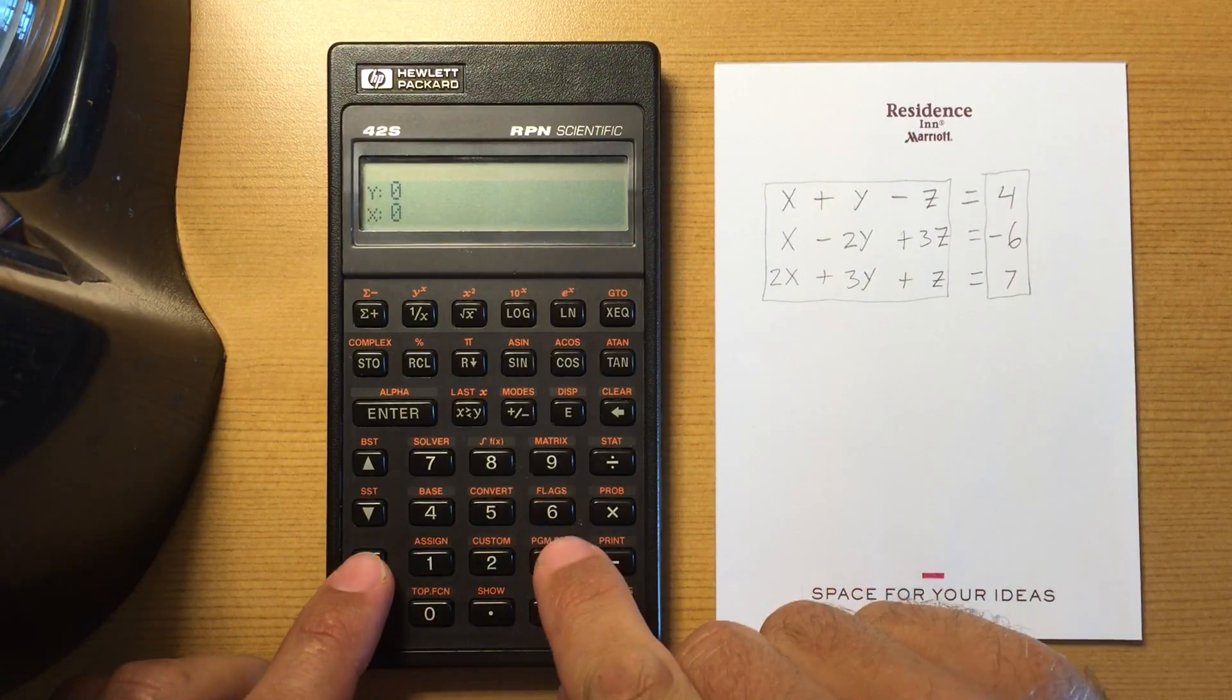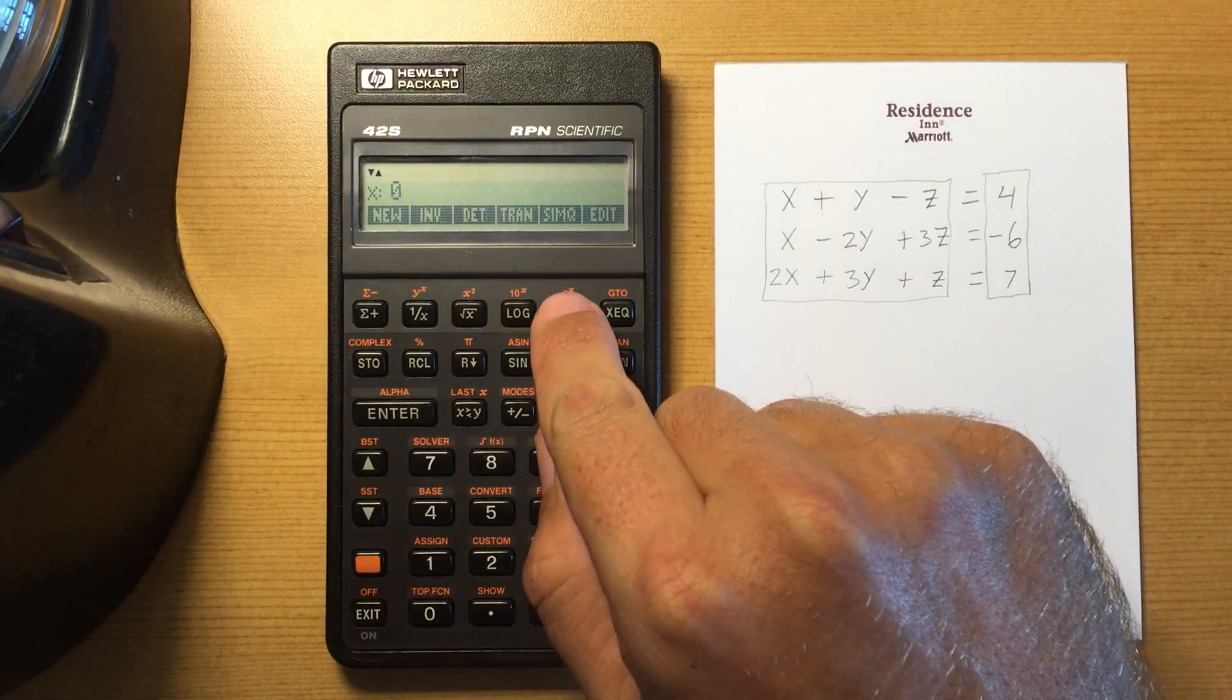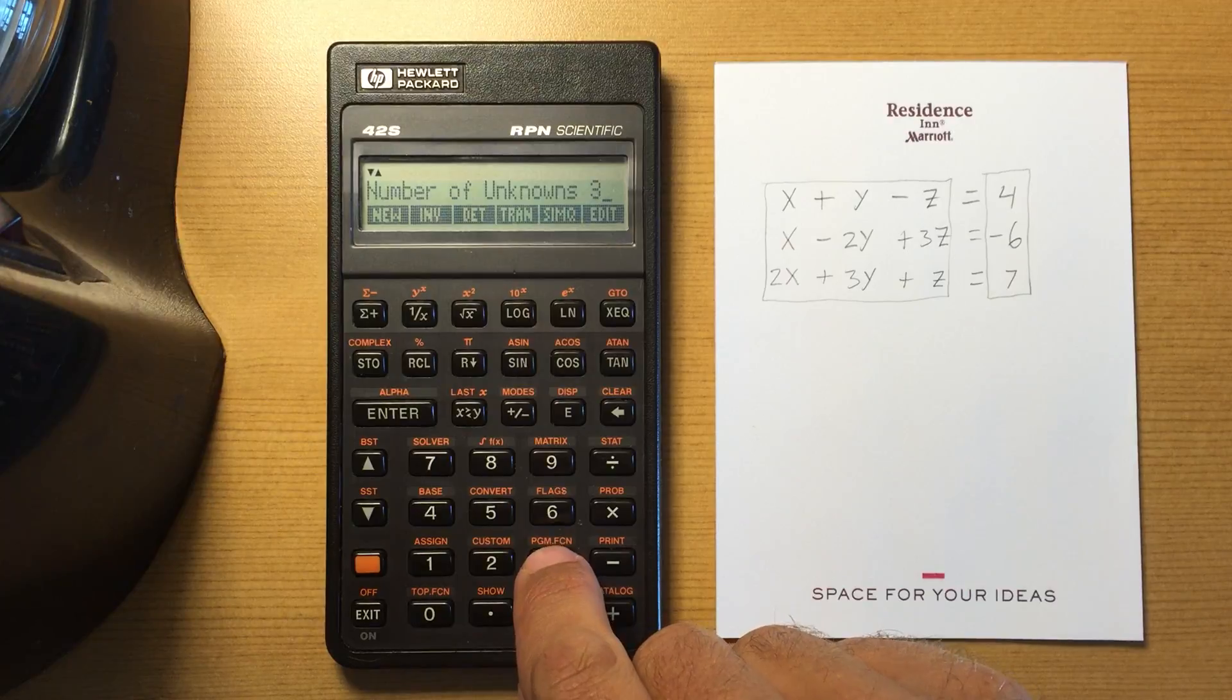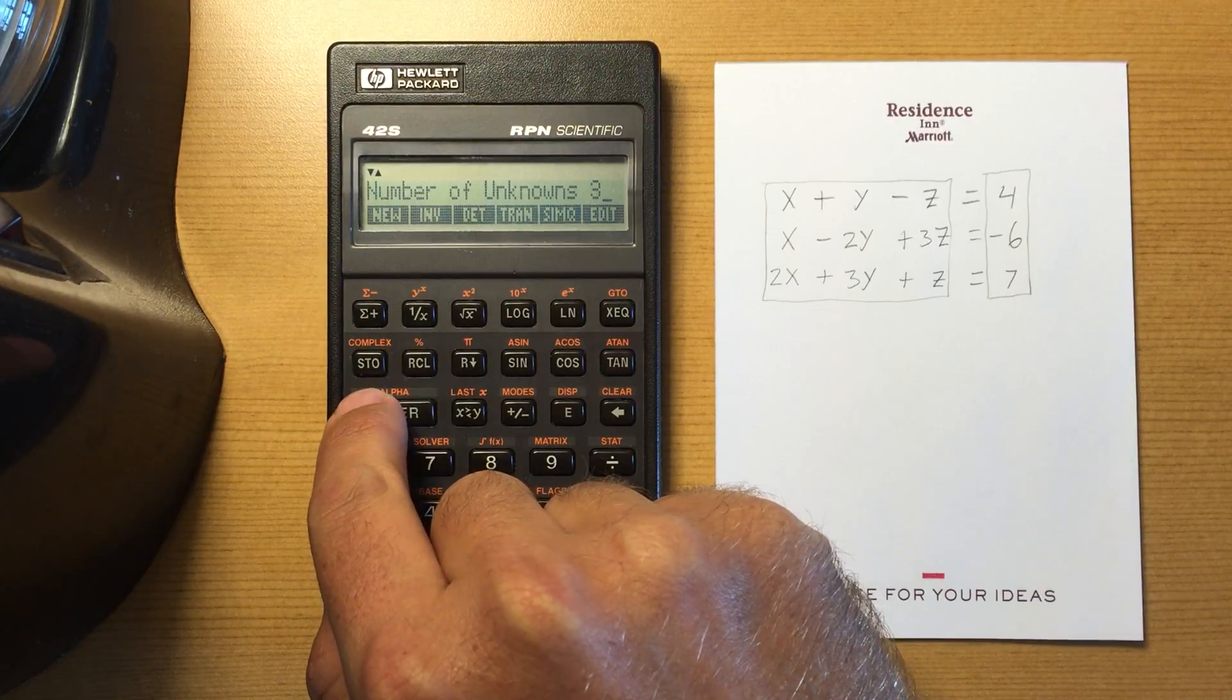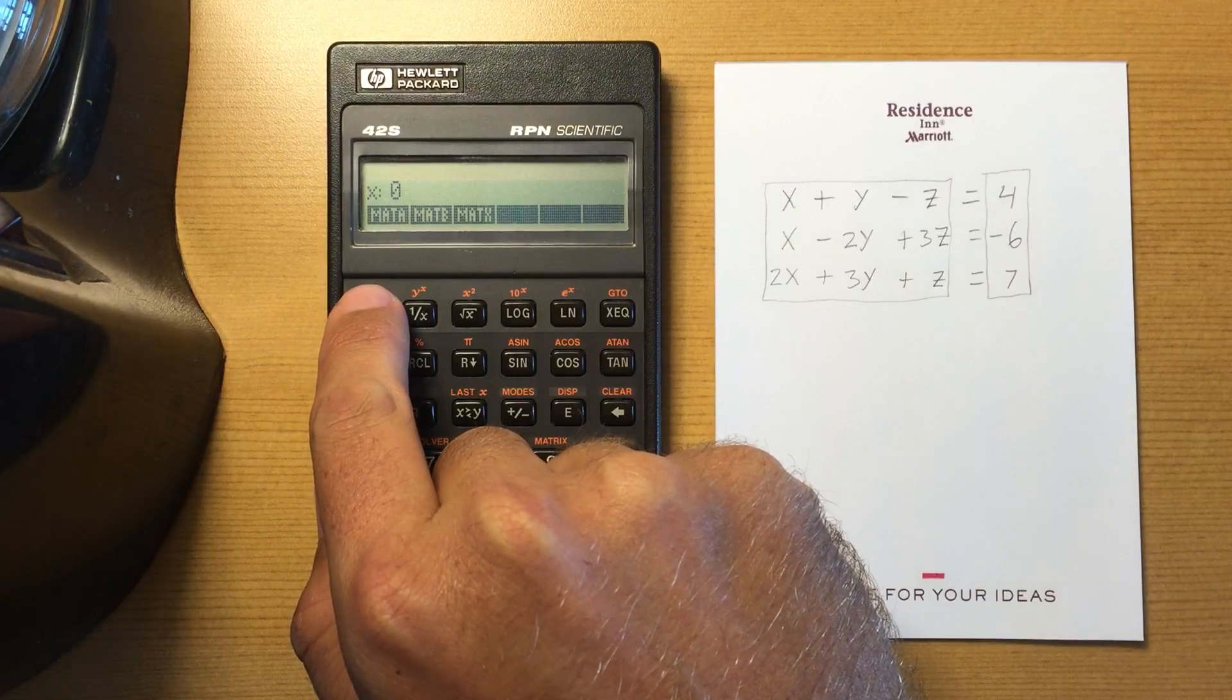So go to the matrix menu, that's orange matrix, the simultaneous equations a number of unknowns so we have 3 so I'm going to hit 3 enter or I could do 0 3 and now I'm going to enter in matrix A.